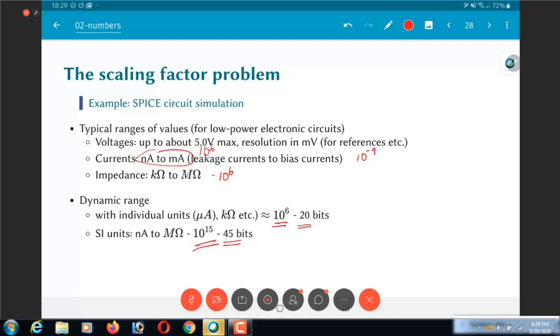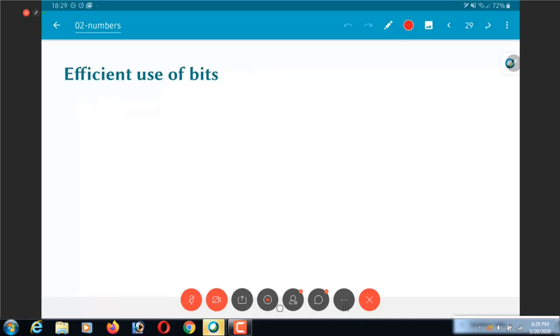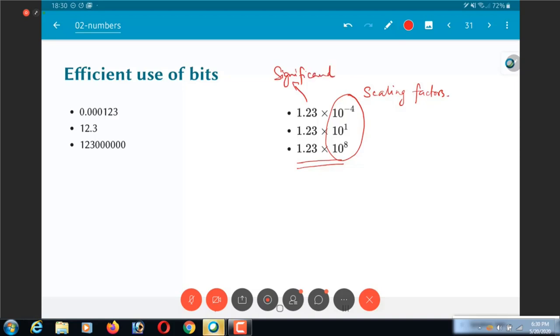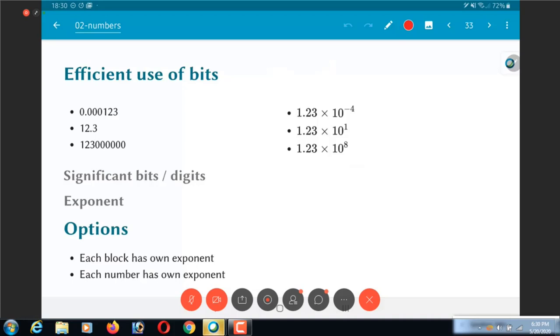So the question becomes how can I represent all of these different numbers in some consistent manner without having to worry about what scaling factor is being used and what number I am representing. So we are looking for a more efficient use of the bits. And in scientific notation, that problem has already been solved. What we say is if I had all of these different numbers to be represented, I could have them all represented in a similar manner with the scaling factors taken care of separately. I have to specify the scaling factors independent of the significant digits. So I can basically break up the representation into a significant digit or significant bit and an exponent portion.